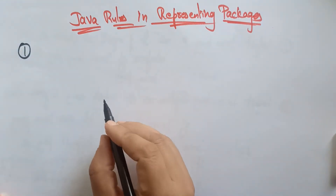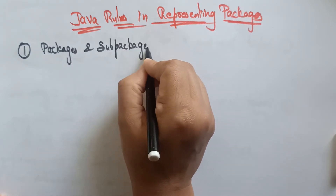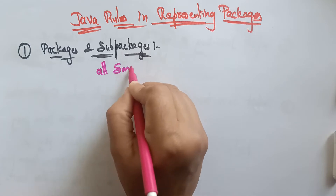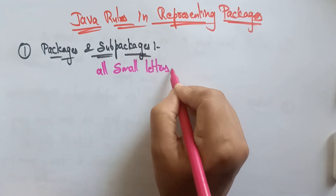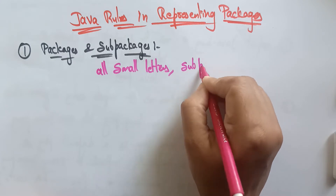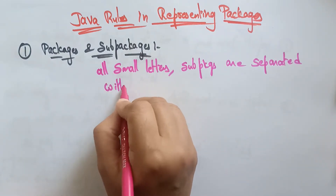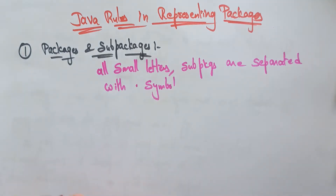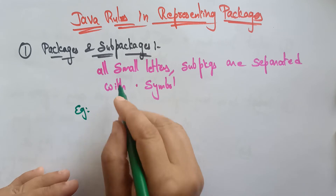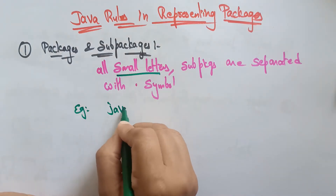First, I want to clarify packages and sub-packages — how to differentiate them and how the user knows which is a package and which is a sub-package. All packages should be written in all small letters, and sub-packages are separated with a dot symbol. Remember this. Packages and sub-packages should all be small letters, and sub-packages are separated with a dot — for example, java.lang.